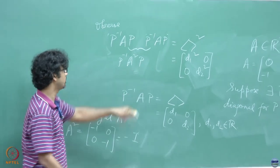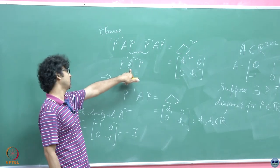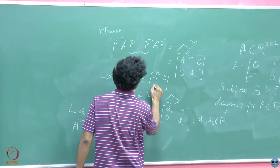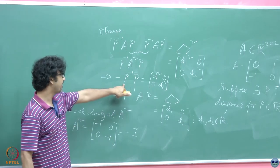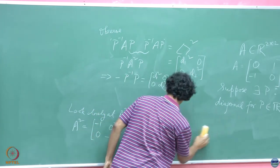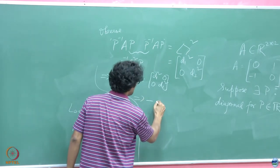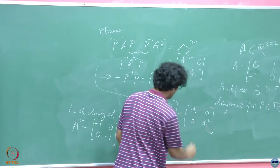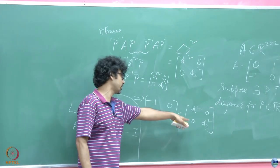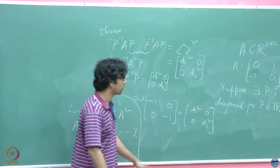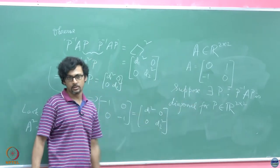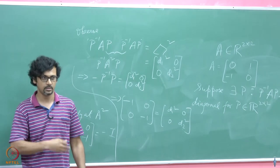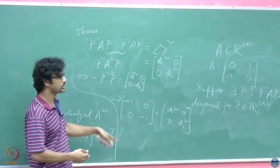Since A² = -I, we have P⁻¹(-I)P = diag(D₁², D₂²), which gives -I = diag(D₁², D₂²). This means D₁² = -1 and D₂² = -1. There are no real numbers satisfying this. So if you are searching for diagonalizability over real matrices, this matrix fails to yield such a P⁻¹AP solution.